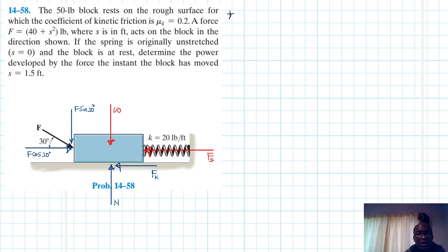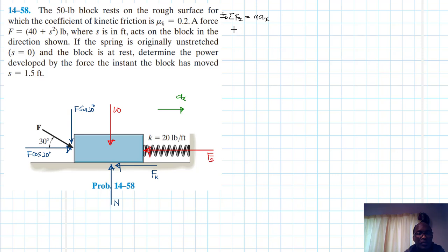Let's apply the equations of motion. We have motion in the x-direction, so the summation of forces in x equals m·ax. With our reference direction, this gives: F cos 30 − fk − fs = m·ax.